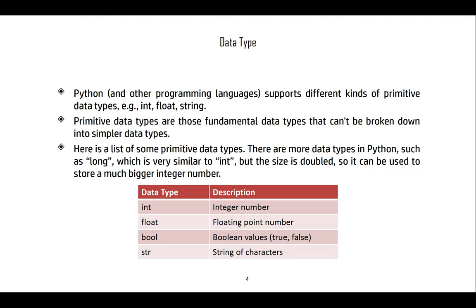Int is the integer number. Float is a floating point number. Bool is a Boolean value. These are values true and false. This is one of the data types that's going to be very important in the future. And str, the string of characters, which are going to be the topic for today.